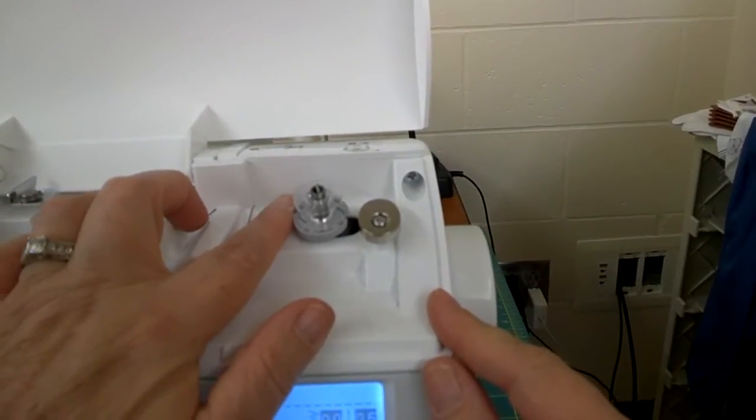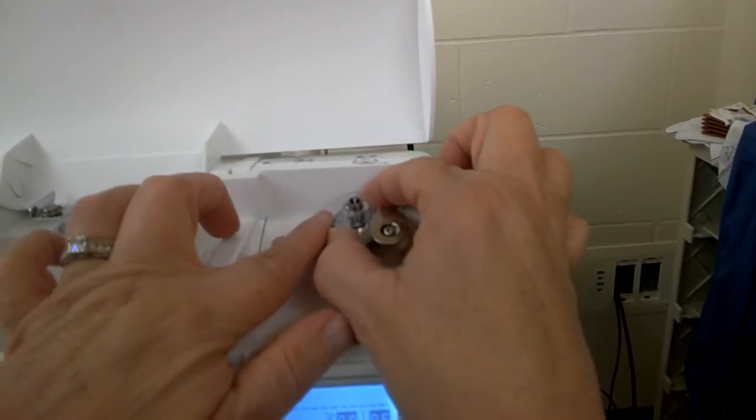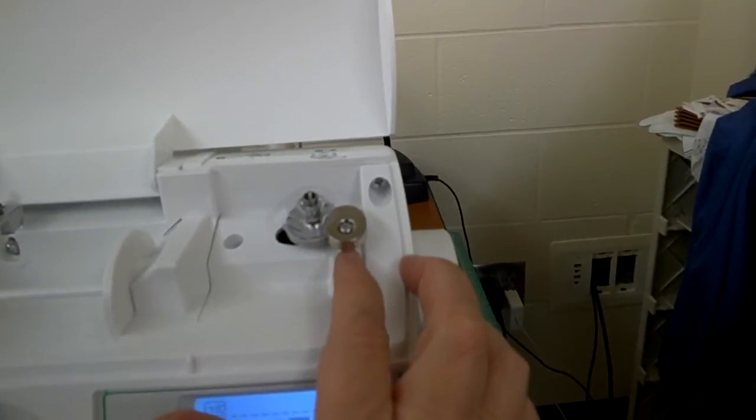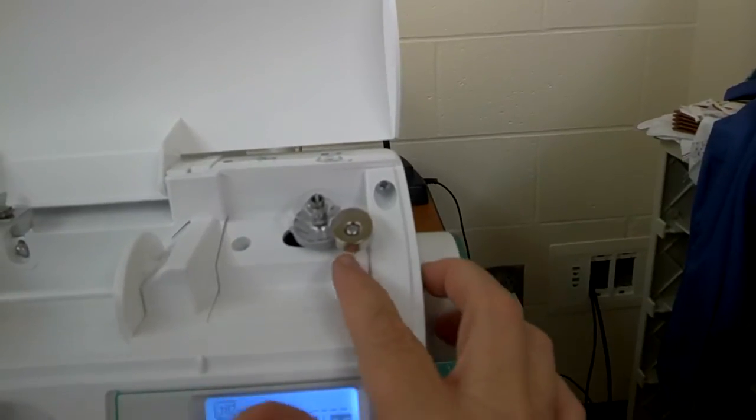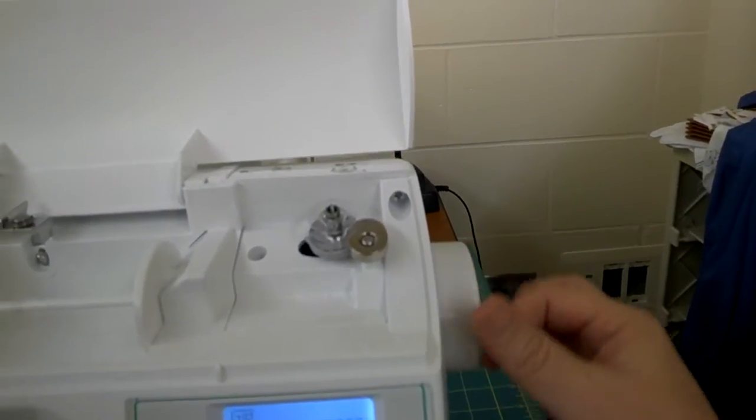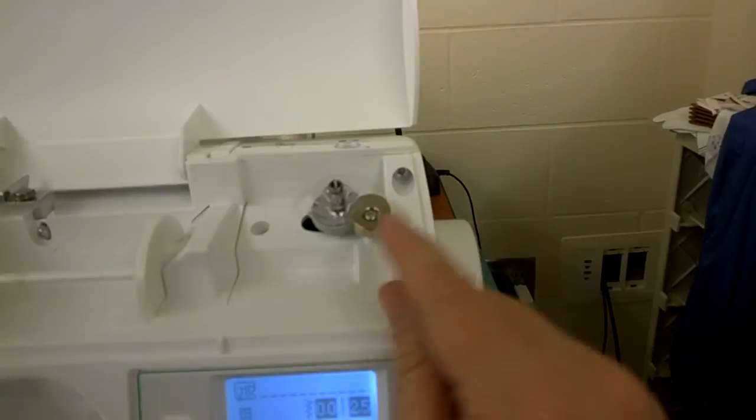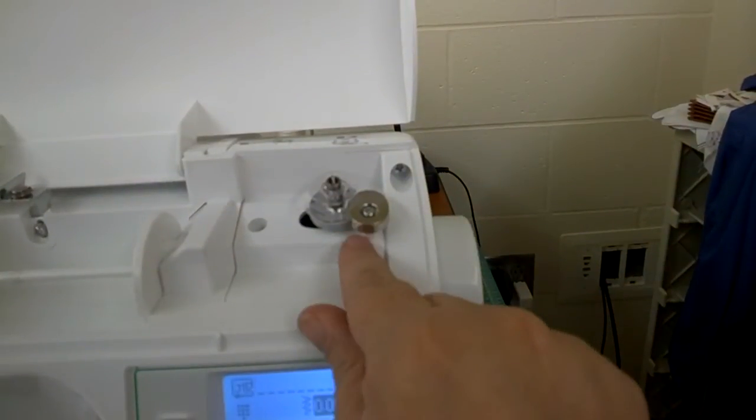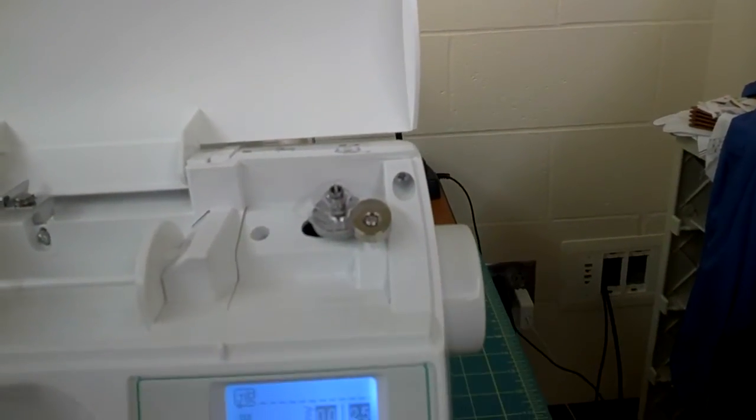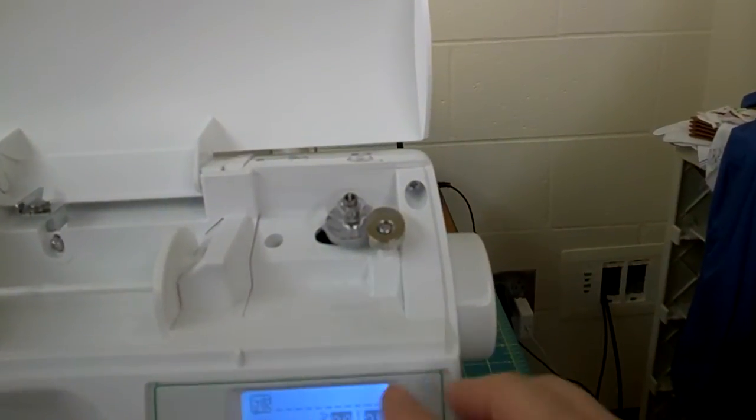You take your bobbin winder and you move it over. When you move it over, it locks it where the flywheel doesn't go around and it just winds the bobbin. It puts the mechanism here to turn the bobbin. That's the first thing you do.